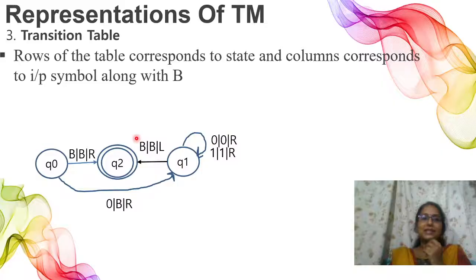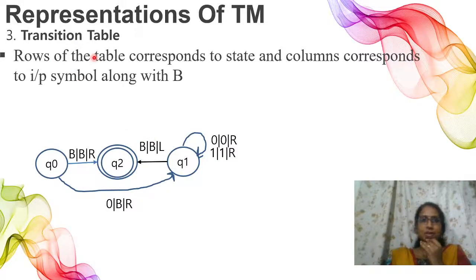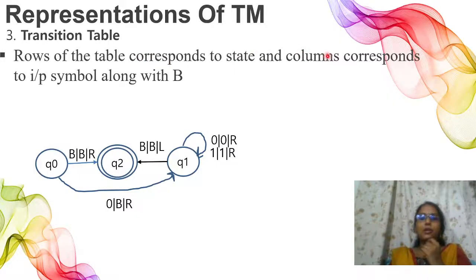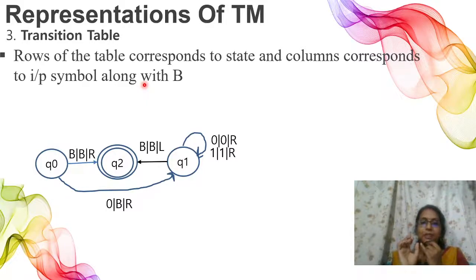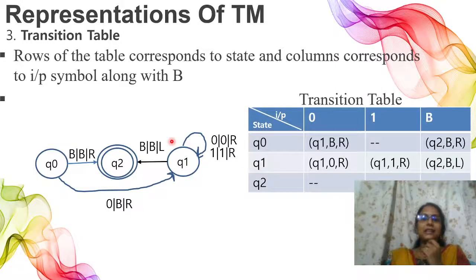The third method is the transition table. In the transition table, we have a table similar to finite automata. The rows of the table correspond to states — q0, q1, q2 — and the columns correspond to tape input symbols along with the blank symbol b. Each cell gives the output state, replacement symbol, and direction. This is the major difference from finite automata — we have a replacement symbol in addition to the next state.